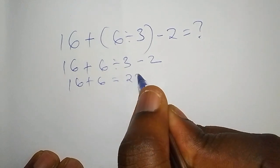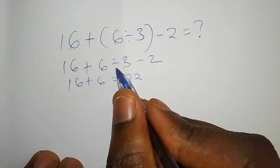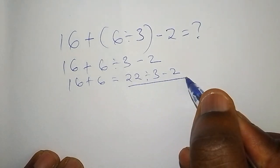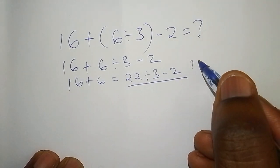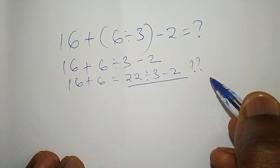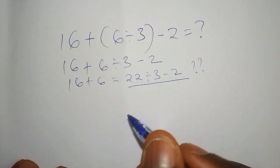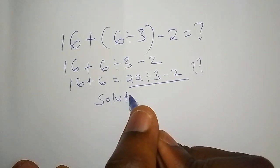Then from there you take 22 ÷ 3 - 2. This step will get your answer wrong. Now come with me so I can show you the best method to work it out. Let's begin with the solution.